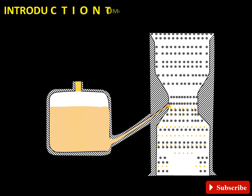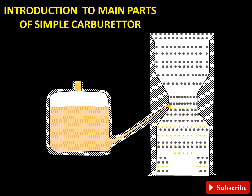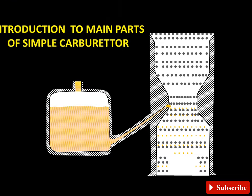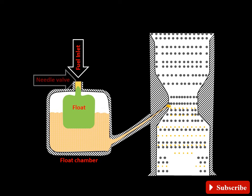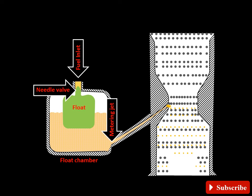Introduction to main parts of simple carburetor: fuel inlet, float chamber and float which controls the amount of fuel inlet through needle valve, metering jet and discharge jet.